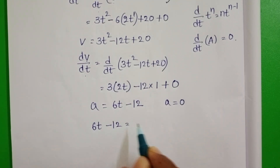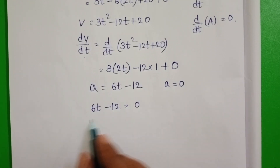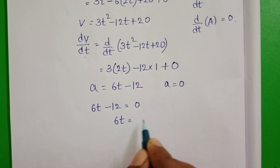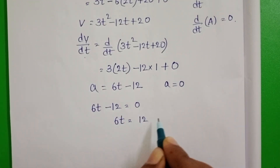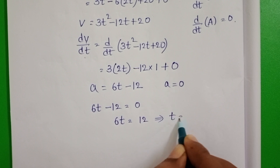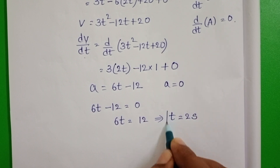When acceleration equals zero, substitute zero for acceleration and find the time. Setting 6t minus 12 equals zero gives 6t equals 12, therefore t equals 2 seconds.